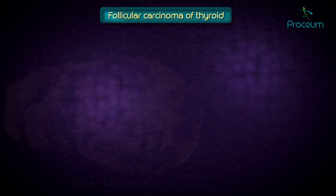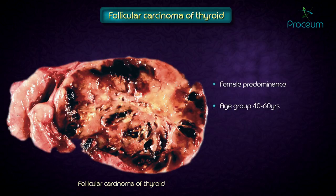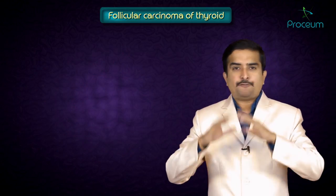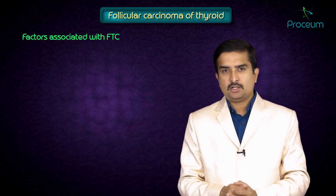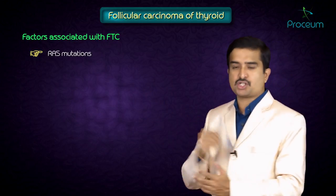Let us discuss the second type, which is called follicular carcinoma. Follicular carcinoma of the thyroid has a female predominance, where the age group is between 40 to 60 years. In iodine-sufficient areas, up to 10% of all thyroid cancers are follicular cancers. The factors associated with follicular thyroid cancer include, first, the RAS mutation.